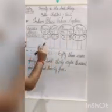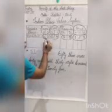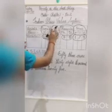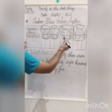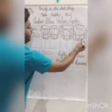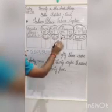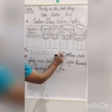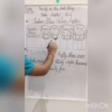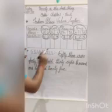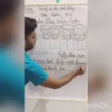Now let us read the number. Fifty-three is in the crores period, so it is 53 crore. 49 is in the lakhs period, so it is 49 lakh. 38 is in the thousands period, so it is 38,000. And this is 125. So we have the number: 53 crore, 49 lakh, 38,125.